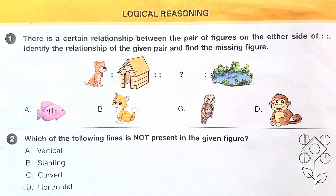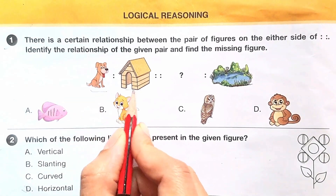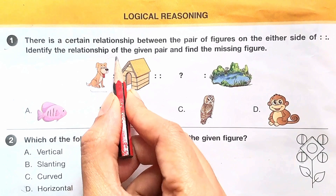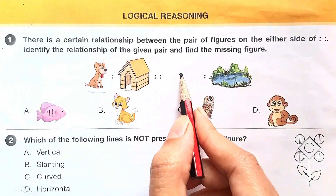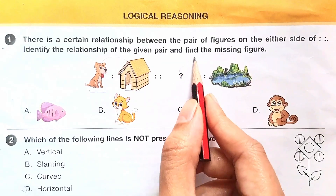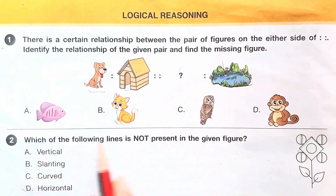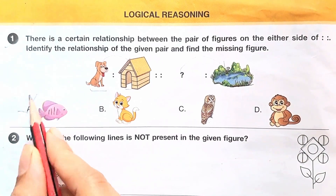The dog lives in a kennel, so the house of the dog is kennel. So which animal lives in water? From the given options we can select fish. So the answer is option A.